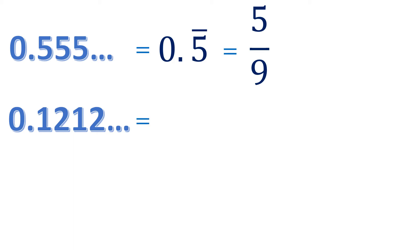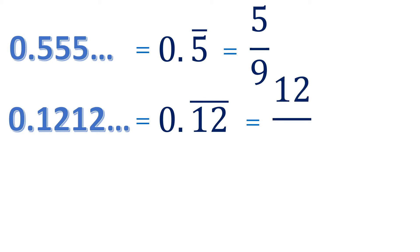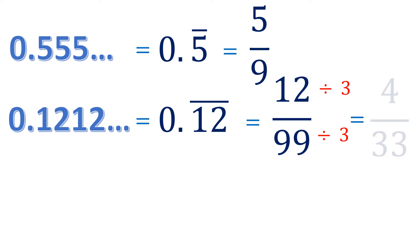For example, 0.1212... can be rewritten as 0.12 bar. We copy 12 on top and put two 9s in the denominator because there are two digits on top, giving 12/99. We can reduce this since 12 and 99 are both divisible by 3, so the reduced form is 4/33. That means 0.12 bar equals 4/33, and similarly 0.5 bar equals 5/9.